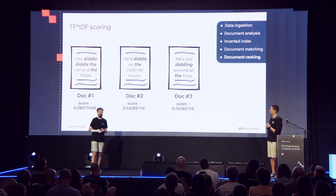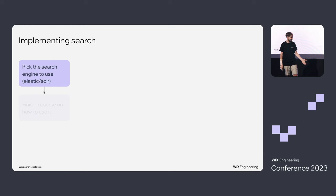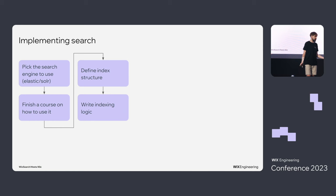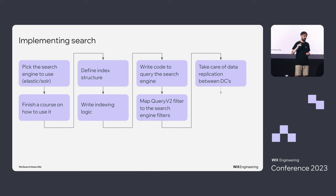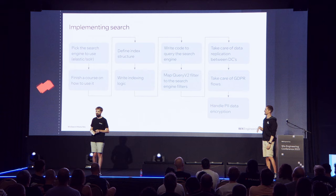How do I get search in my app? You need to implement it as a feature. You need a search engine and to know how to use it. You need to define your index structure, indexing logic, querying logic, map platformized filters to search engine filters. Then you need to take care of data replication between data centers, GDPR, PII — and we're not even starting to talk about data migration. This is way too many boxes and arrows; it's going to take me months. I think I'll stick to what I have — it's good enough.